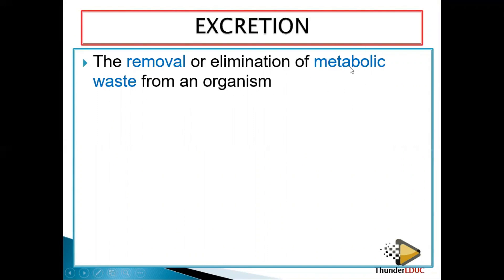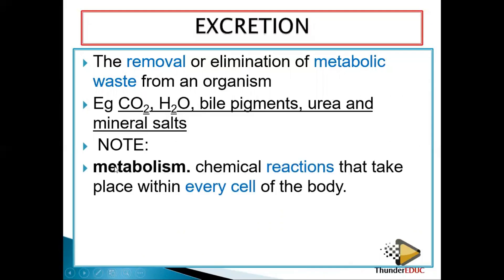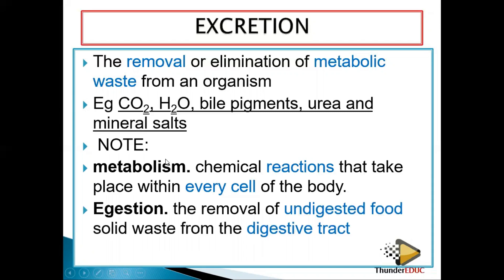When we talk about metabolic, we're talking about the breaking down processes which occur in the organism — in the human body. Wastes include carbon dioxide, water, bile pigment, urea, and mineral salts. Metabolism is a chemical reaction that takes place within every cell of the body.